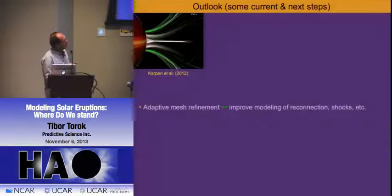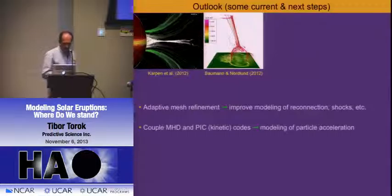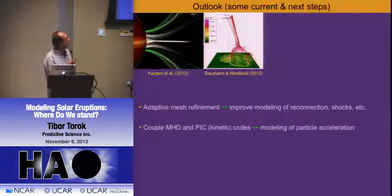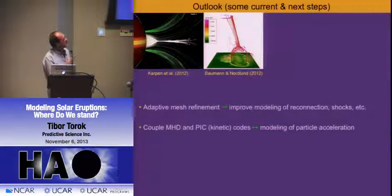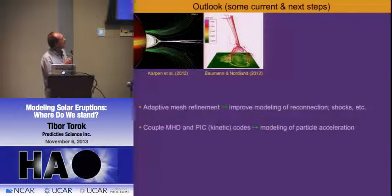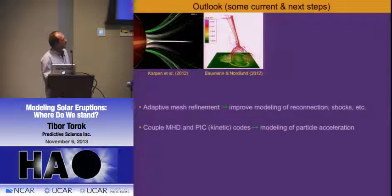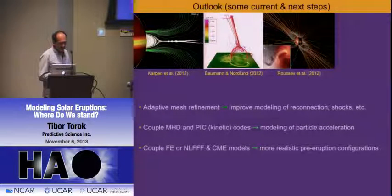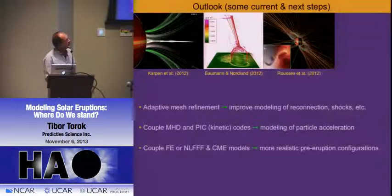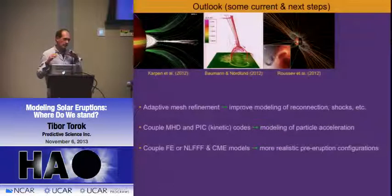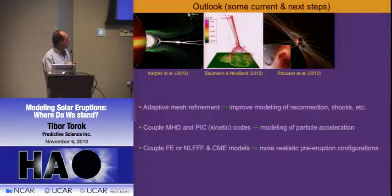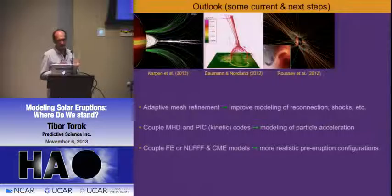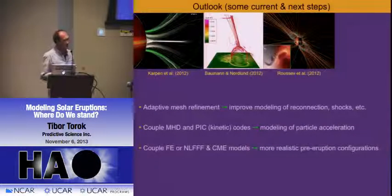These models are still simplified. We mentioned the huge range of length scales in solar eruptions—we don't have this yet in these models. The complete set of plasma equations and our boundary and initial conditions are still simplified; we cannot use 1-to-1 magnetograms, we have to smooth them down. One thing people are using is adaptive mesh refinement, which means locally increasing the resolution of your grid as the simulation proceeds—for example, where reconnection takes place. This is an improvement; you start to see plasmoids, which you typically don't have in MHD simulations. This is also useful for shocks.